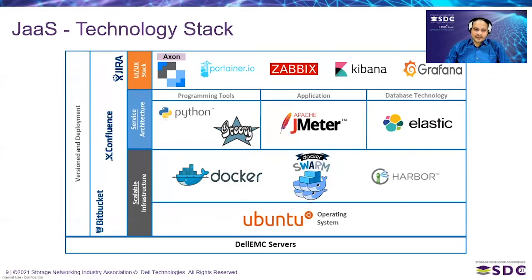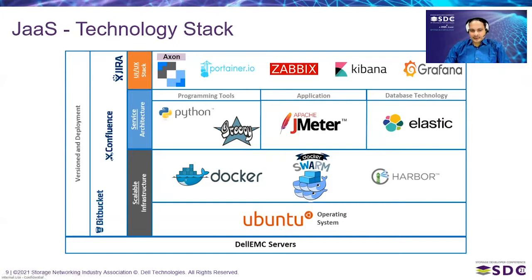The software stack has multiple tools based on roles. End users use Axon to run workloads and monitor them using Grafana. Administrators use Port Runner and Javix for monitoring jobs and nodes. All code is stored in Bitbucket, with Jira for issue tracking and documentation. Most tools in this technology stack are open source and widely available.